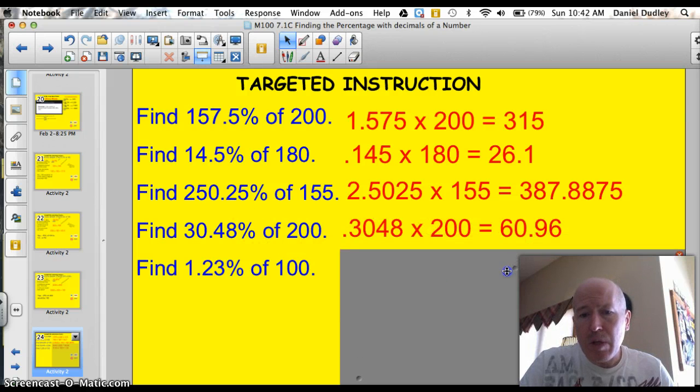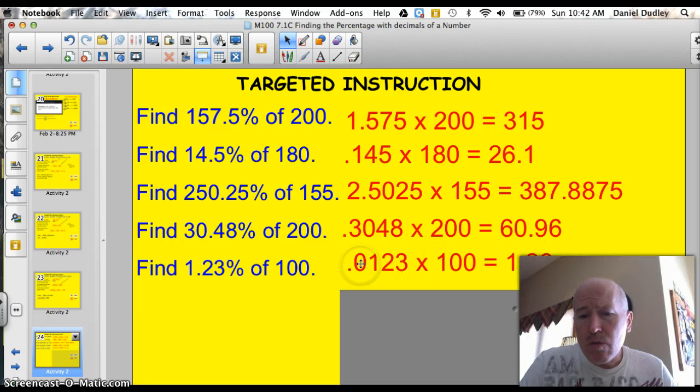Times 155 would be 387.8875. 30.48% multiply that by 200 would be, move the decimal two spots, you've got 0.3048 times 200, it'll give you 60.96. And this is kind of a tricky one. We need to find 1.23% of 100. Well, when you move that decimal two spots, you're going to need to add that 0 as a placeholder. 0.0123 times 100 would give us 1.23.